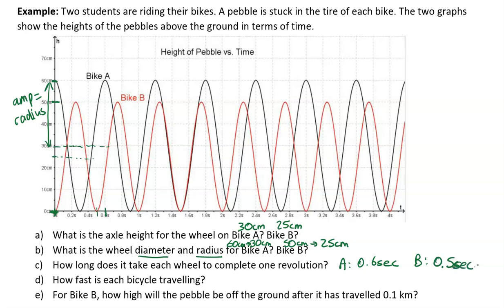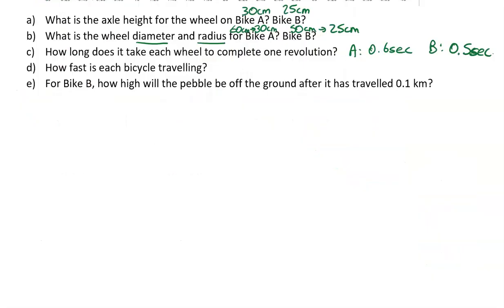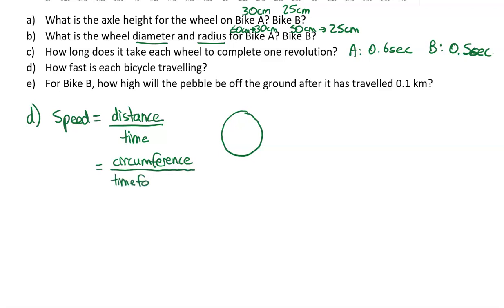And so now we actually have to do some calculations with these numbers. It says, how fast is each bicycle traveling? Well, if we know the radius and we know the time, we can calculate the speed. Let me first remind you that speed is equal to distance over time. We're going to do a lot with this unit about speed, and speed is always going to be distance over time. If we're talking about a circle, a wheel, going all the way around a wheel, the distance around that wheel is the circumference. And if we're going around the circumference once, it's the time for one cycle.